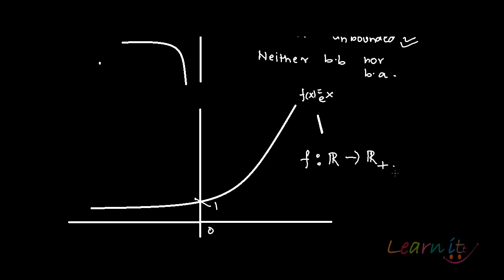This function is from R to R plus. It is a function from R to R plus because exponential values are positive. All the values that you will get will be positive and that is why I have not specifically drawn the negative y-axis.